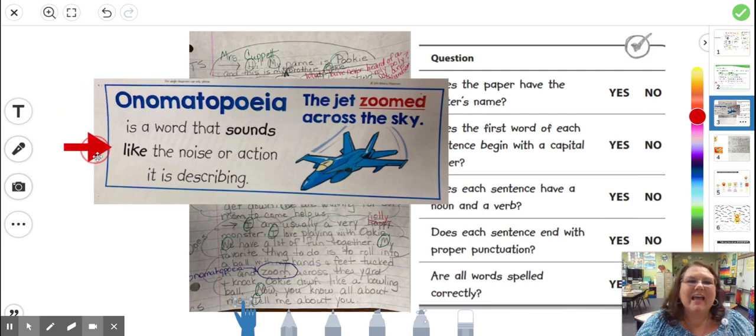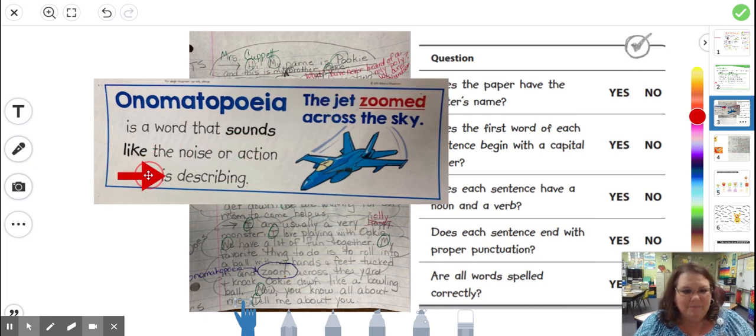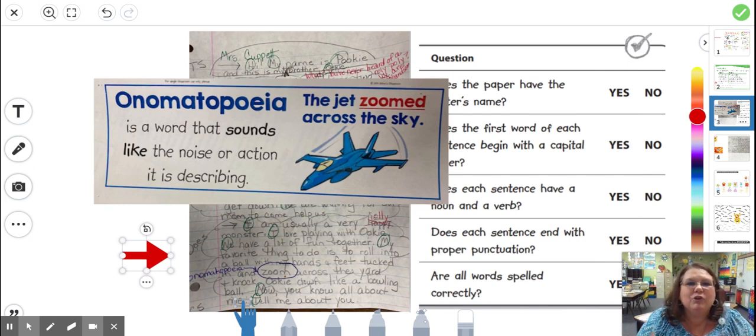Onomatopoeia is a word that sounds like the noise or action it's describing. So the jet zoomed across the sky. So if you hear a jet outside, it sounds like zoom. So that's why it's called onomatopoeia. The word sounds like the noise it's describing. So I actually used zoom in mine. So try to find right now a place where you can describe how your monster moves or sounds and use a word that sounds like the noise or action it's describing.